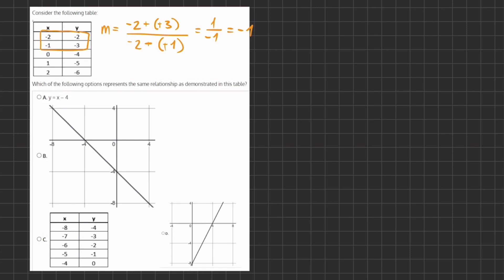Now we know that our y-intercept is at negative four because the y-intercept occurs when x equals zero and y is negative four. So our point slope form is going to be y equals negative one times x plus our y-intercept which is negative four. This is what we're going to be looking for and analyzing in our answers.